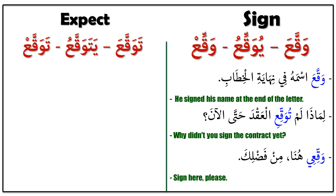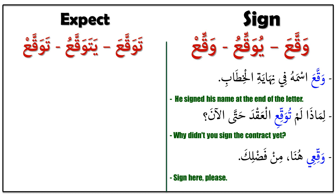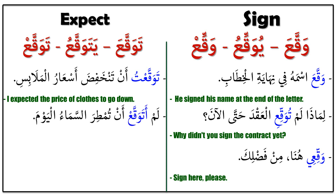The last verb is تَوَقَّعَ — it means 'to expect.' We learned this verb before; it comes from just the one root. Please look at the first sentence: تَوَقَّعْتُ أَنْ تَنْخَفِضَ أَسْعَارُ الْمَلَابِسِ — it means 'I expected the prices of clothes to go down.' تَوَقَّعْتُ أَنْ: I expected to, تَنْخَفِضَ: go down, أَسْعَارُ الْمَلَابِسِ: the prices of clothes.